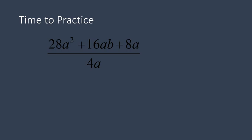All right. We are back and ready to get started with this. I would divide this into three separate fractions. 28a squared over 4a. 16ab over 4a. And 8a over 4a. This will help me so that I can factor these, each fraction individually. 28 divided by 4 gives me 7.